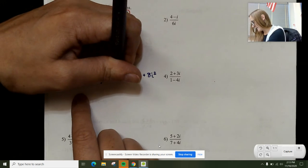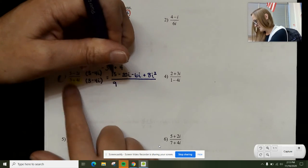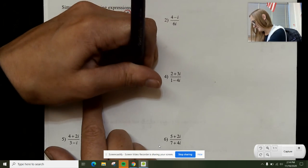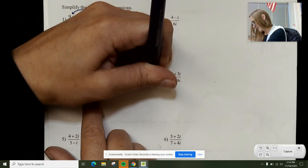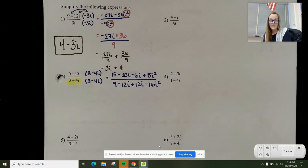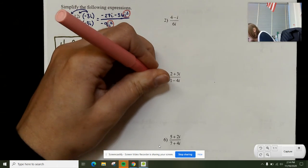Looking at the bottom, I have 9 minus 12i plus 12i minus 16i squared. I'm going to switch my i squareds and I'm going to combine like terms. I see i squareds here and here.